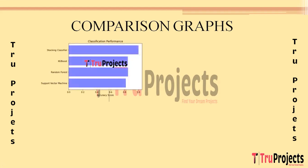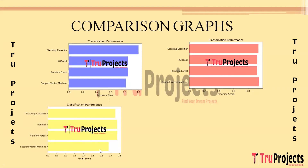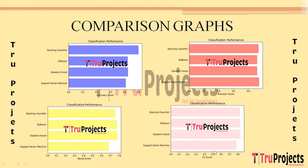Comparison graphs are shown for different algorithms. The horizontal bar graph compares accuracy scores — the percentage of correctly classified instances. A precision scores graph shows how many predicted positives were actually correct. A recall scores graph shows how many actual positives were correctly predicted. Finally, an F1 score graph combines precision and recall into a single metric, balancing accuracy and completeness. The best-performing algorithm across all metrics will be used for predictions.